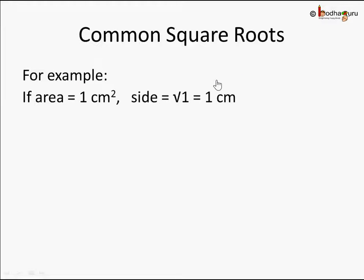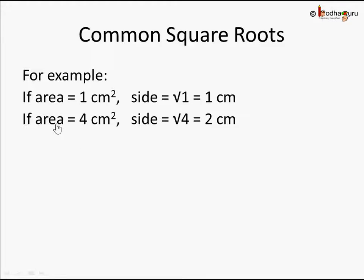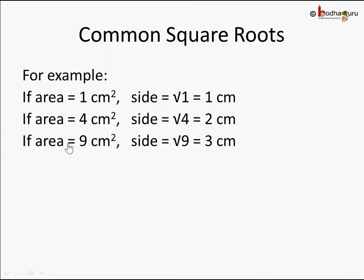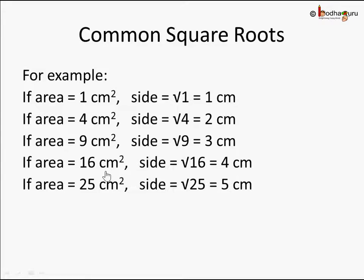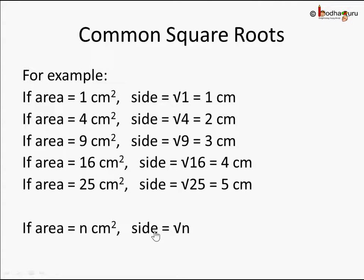Let's see some of the common square roots. If area is given as 1 centimeter square, its side would be square root of 1, which is 1. If area is given as 4 centimeter square, the side would be square root of 4, which is 2 centimeters. If the area of the square is 9 centimeter square, then each side would be square root of 9, that is 3 centimeters. In general, if the area is n centimeter square, then each side is square root of n centimeters long.